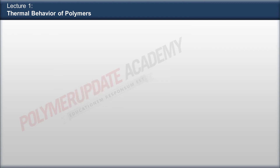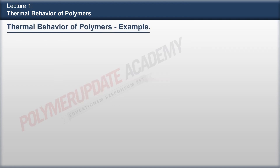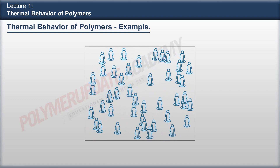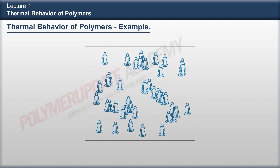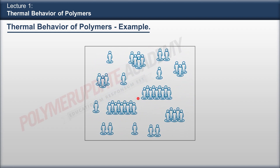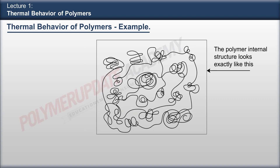Let us understand the thermal behavior of any polymeric material with an example. Let us take an example of a party where people are roaming randomly. Some people are standing in a group of 9 to 10 people, some are in 4 to 5, some are standing in 2, and some are all alone. The polymer internal structure looks exactly like this.